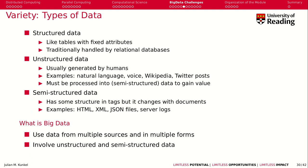As part of the data variety, we have different types of data. First, structured data — like a table with fixed attributes, for example recording a student's name, birthday, and expected future salary. This is well handled by relational databases traditionally. Then we have unstructured data, generated by humans, like natural language, voices, video, or Wikipedia content — you must process this data first to gain some value from it. By processing, we typically create semi-structured data, meaning we impose some structure onto unstructured data, though that structure may change with the document. HTML for the web and JSON files are examples of semi-structured data.